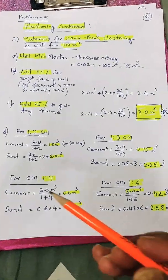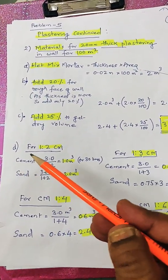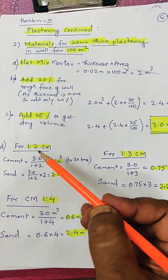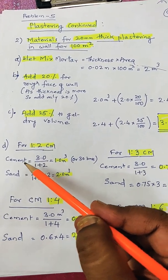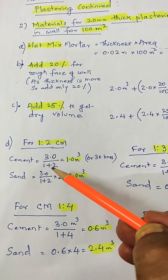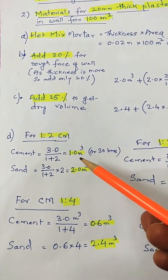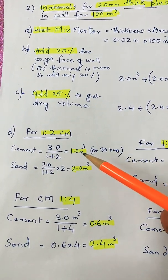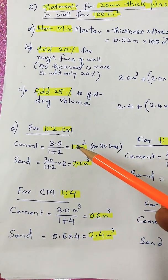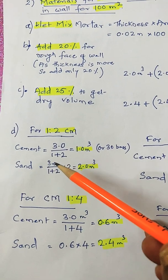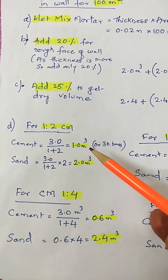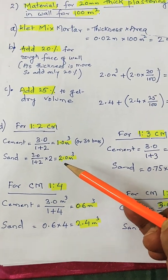Now we calculate the cement and sand required for various proportions. For cement mortar 1:2, the cement required is 3 cubic meters divided by (1 + 2), which gives 1 cubic meter of cement. One cubic meter is almost equal to 30 bags, so you can write it in bags or cubic meters. Sand required is 2 times the cement, so 2 into 1 cubic meter equals 2 cubic meters.